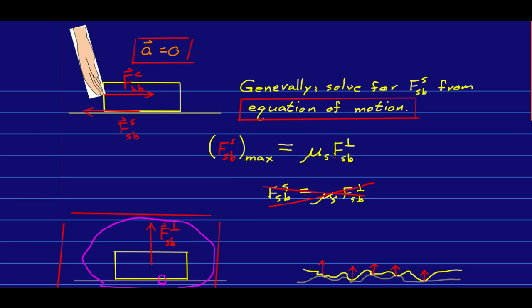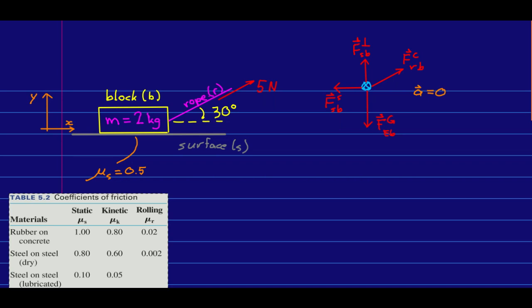In general, it will be less than this and you have to find it from the equation of motion. Let's work a quick example to see some of these ideas. So here's a block on a surface being pulled by a rope and the rope is at an angle above the horizontal. And it is not accelerating.